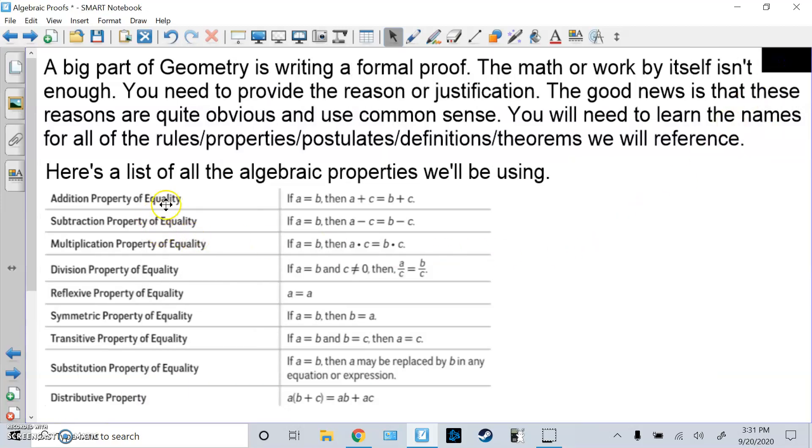Hopefully you've heard the addition property of equality. All that says is if you have A equals B, you can add the same thing to both sides. We can say A plus C equals B plus C. Subtraction property of equality is what you do to one side you do to both sides, you subtract something from both sides. Multiplication property of equality, or PoE is the abbreviation, is you multiply both sides with the same number.